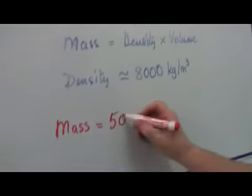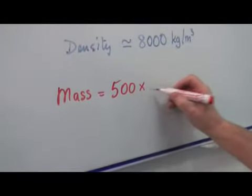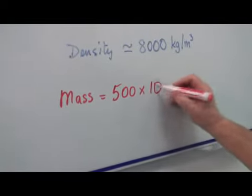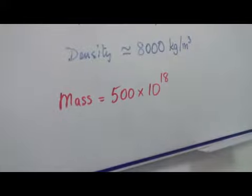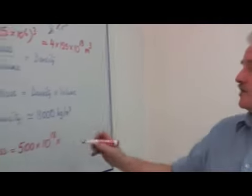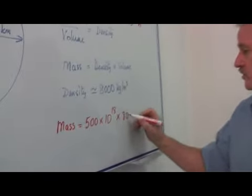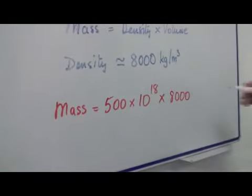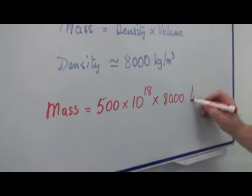So it's 500 multiplied by 10 to the power 18. So that's the volume. And we'll multiply it by the density, which is 8,000.